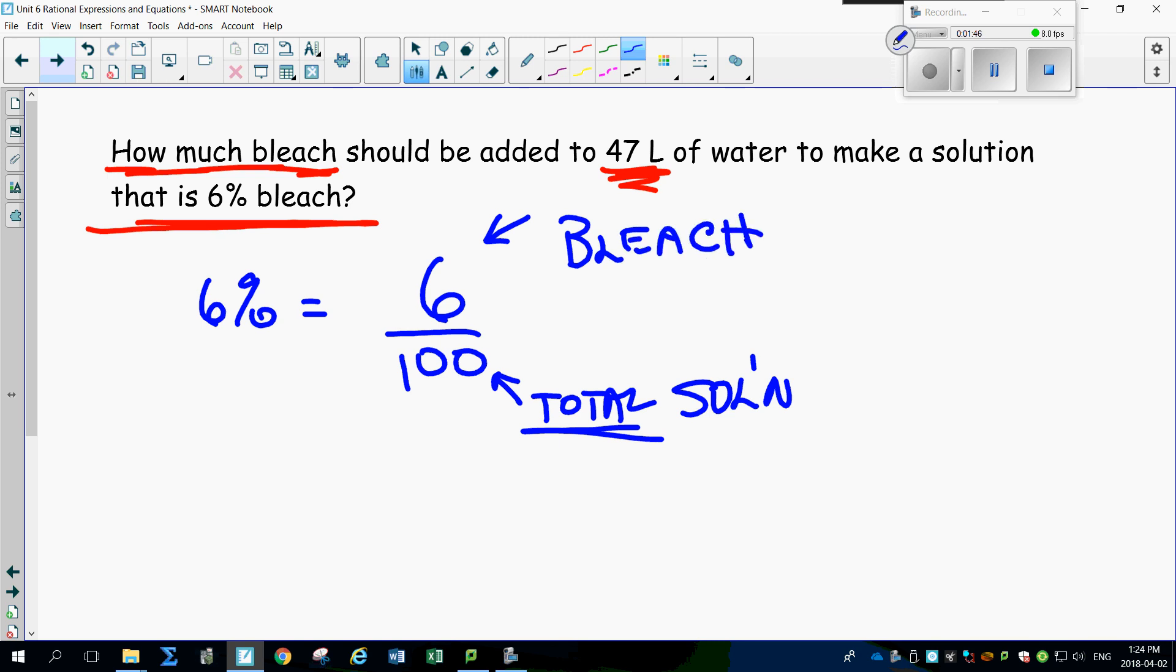So let's go out and write it out properly. Six out of 100 is bleach. That's your total. Now think about it, you're adding how much bleach? Your question is, well, how much bleach, what volume of bleach are you adding here? That's what the V stands for.